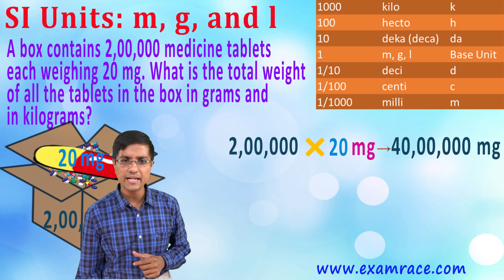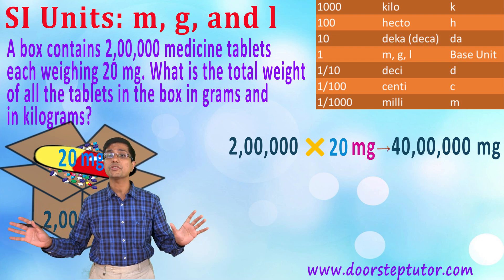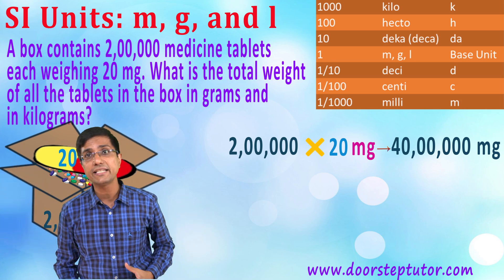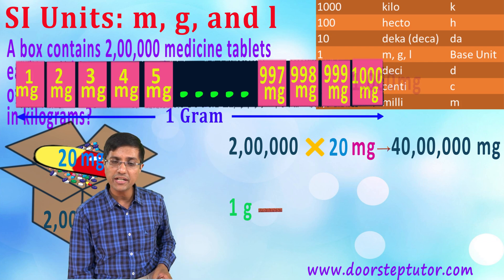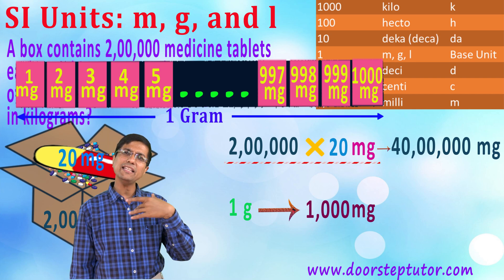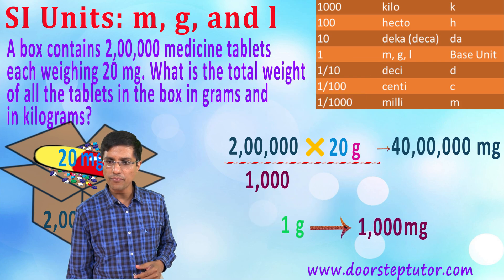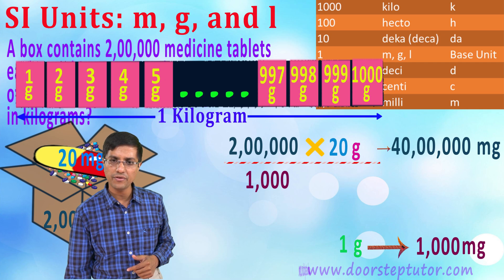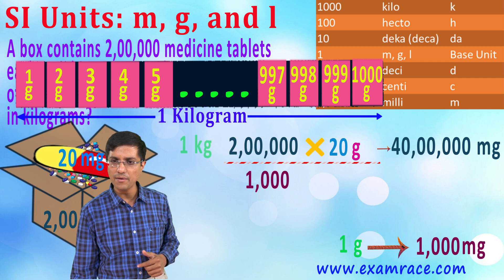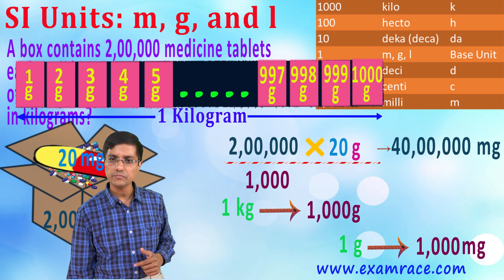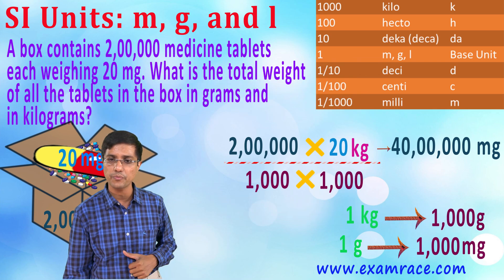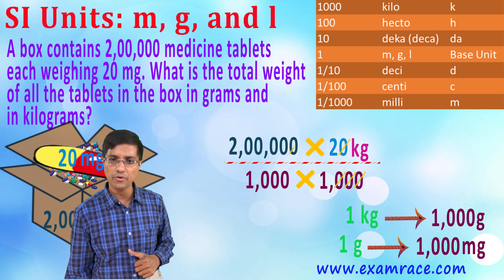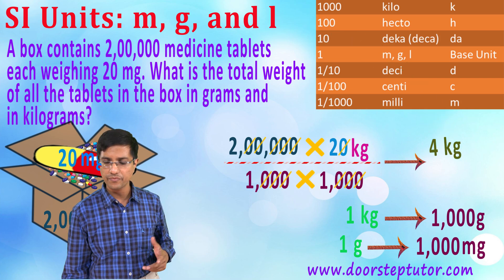Now I want to convert the total weight into kilograms. Kilogram is a very large unit, so fewer of those are needed to denote the same weight. The factor between kilogram and milligram is: from kilogram to gram is 1000, and from gram to milligram is again 1000, so the total factor is 1,000,000. Cancelling six zeros from the large number, I'm left with 4 kilograms.